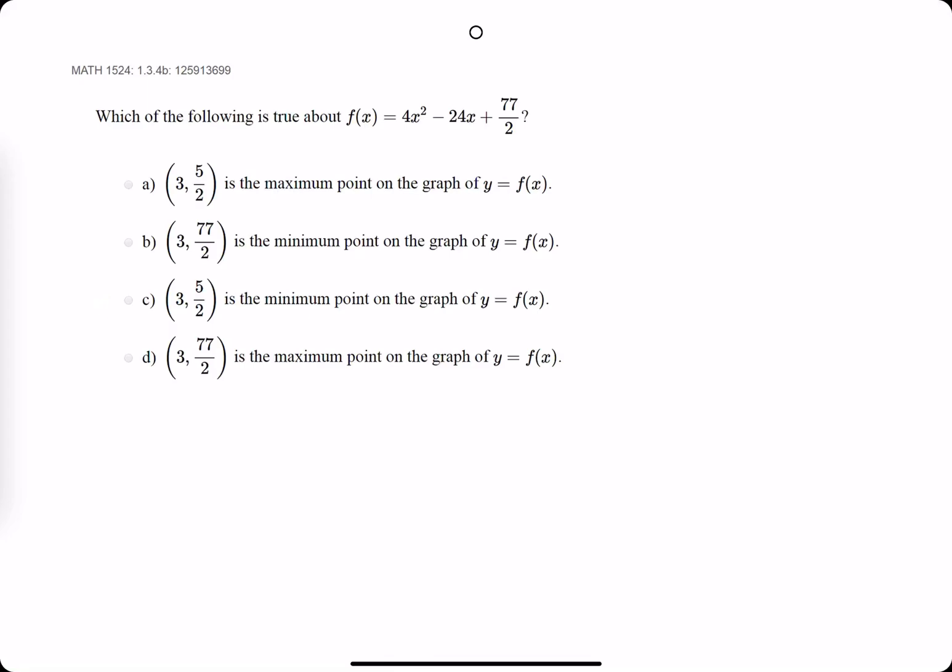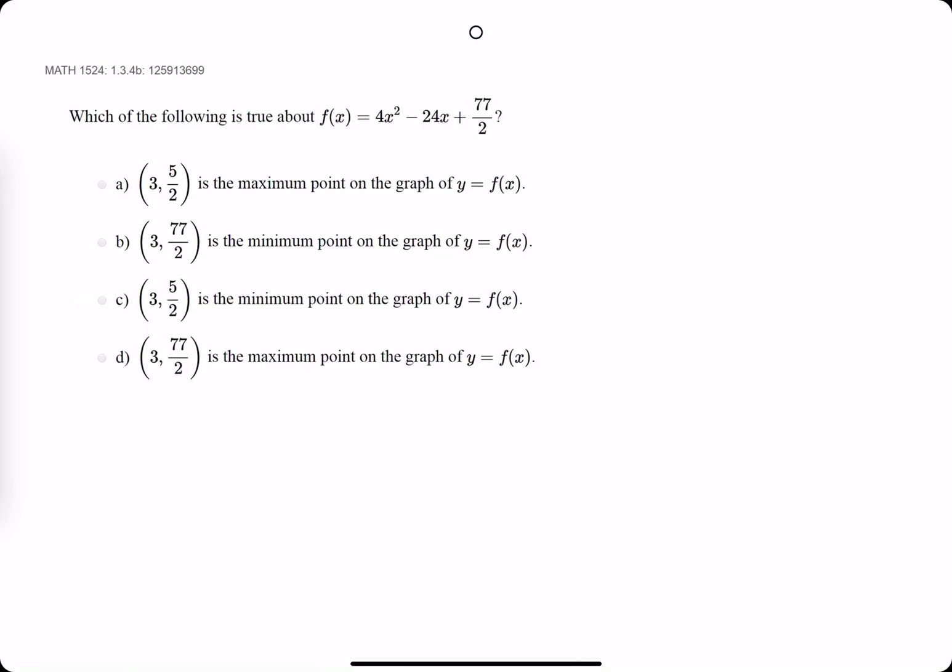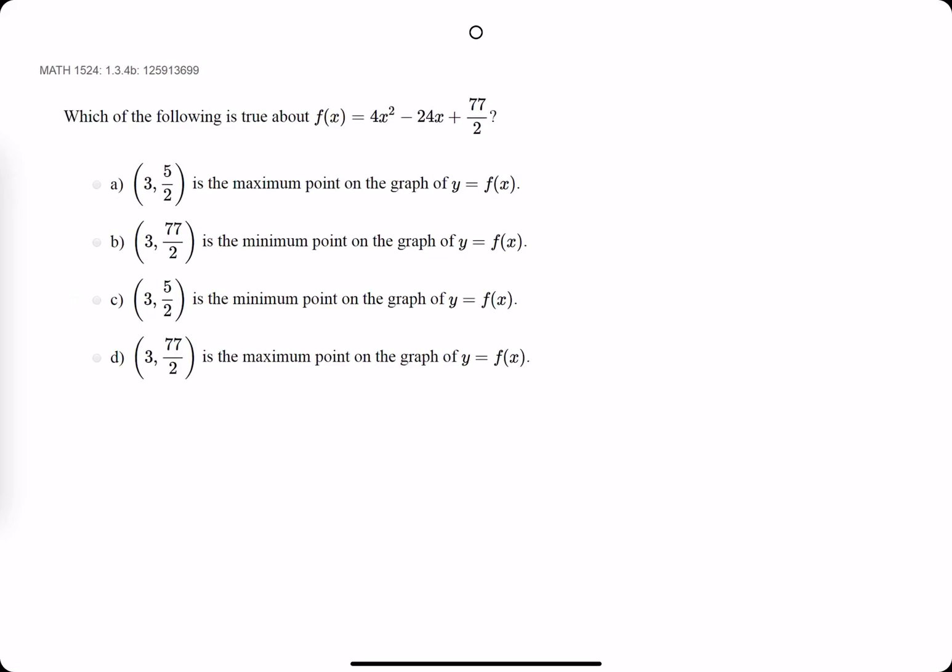Okie dokie. So, for this problem, they say which of the following is true about f(x) = 4x² - 24x + 77/2.